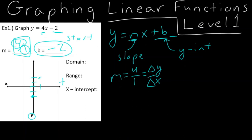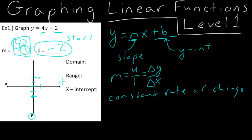A linear function has what we call a constant rate of change — from one point to the next, we go up 4 and to the right 1. Then from that point to the next, we again go up 4 and to the right 1. And once we have 3 points, we can go ahead and graph this linear function, which is a straight line.